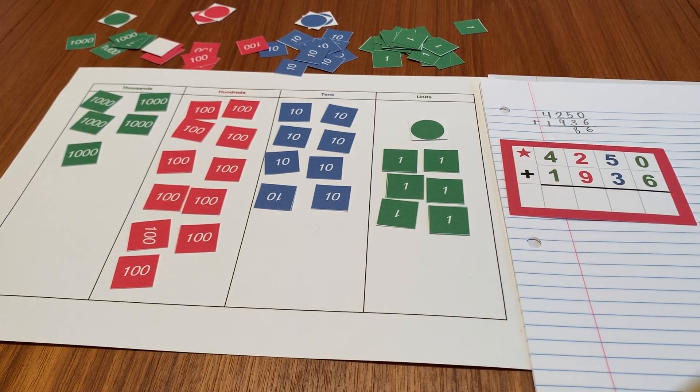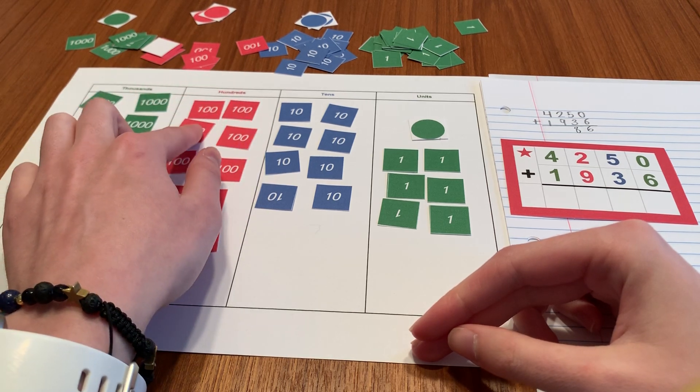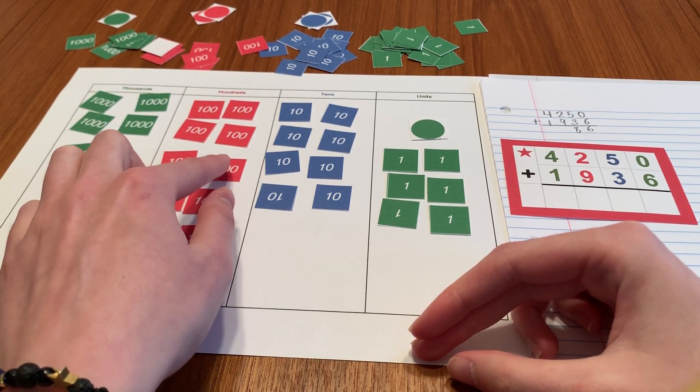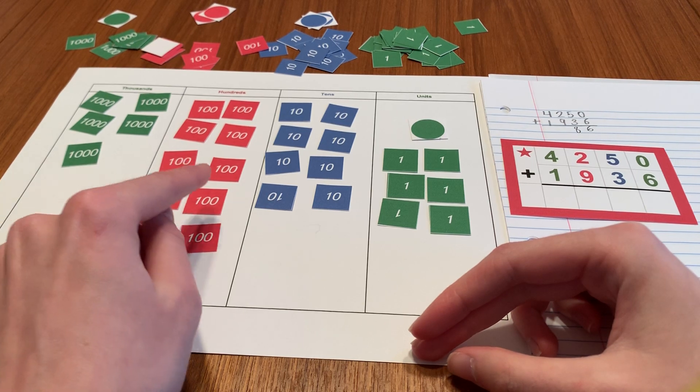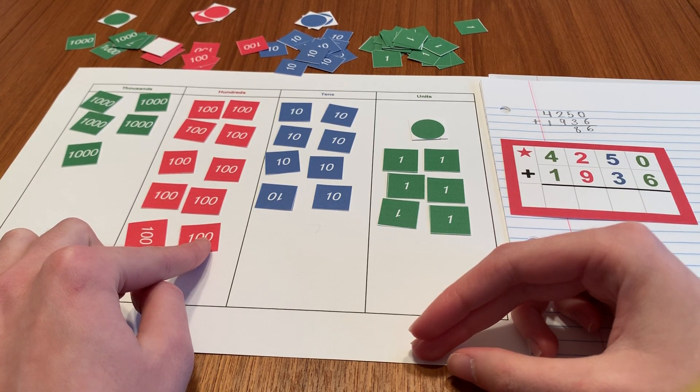Now I'm going to count my hundreds. One hundred, two hundred, three hundred, four hundred, five hundred, six hundred, seven hundred, eight hundred, nine hundred, one thousand.